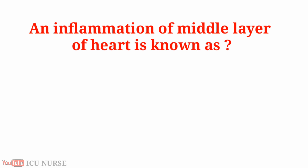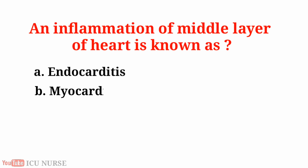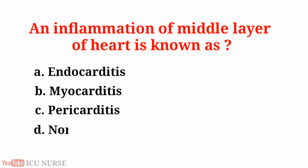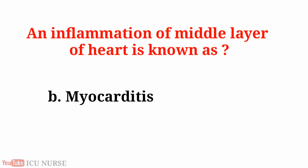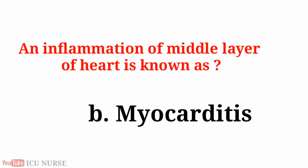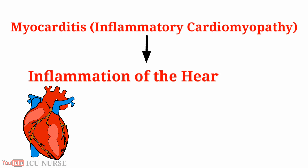Inflammation of the middle layer of the heart. A. Endocarditis, B. Myocarditis, C. Pericarditis, D. None of these. And the answer is B. Myocarditis. Inflammation of the middle layer of the heart is known as myocarditis. Myocarditis, also known as inflammatory cardiomyopathy, is inflammation of the heart muscle.